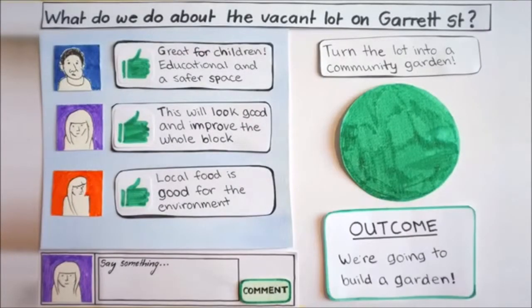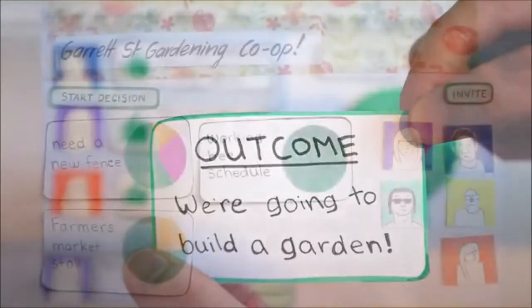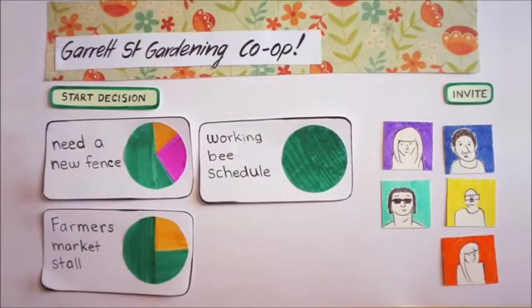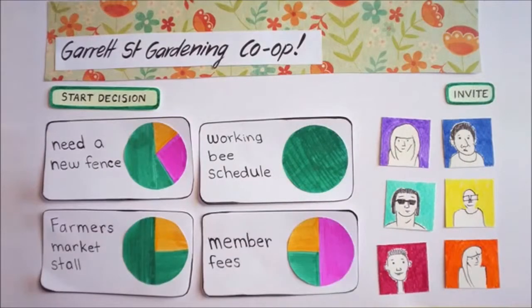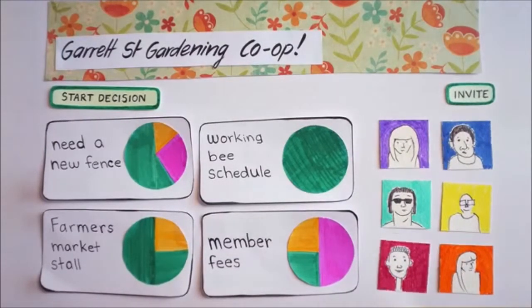The whole group is notified of the outcome so you can start taking action together. If you make lots of decisions with the same people, Lumio can become your group's online home. It creates an archive as you go, so it's easy to see all your decisions.